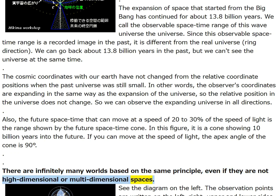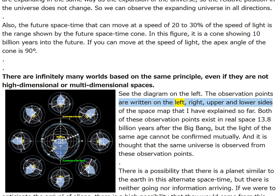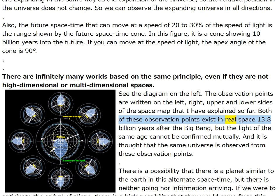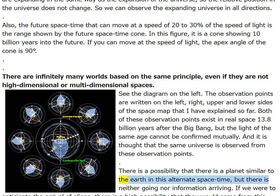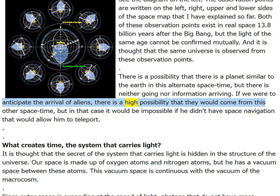There are infinitely many worlds based on the same principle even without high-dimensional or multi-dimensional spaces. Observation points exist on the left, right, upper, and lower sides of the space map — both existing in real space 13.8 billion years after the big bang, but the light of the same age cannot be confirmed mutually. There is a possibility that there is a planet similar to Earth in this alternate space-time, but there is neither going nor information arriving.